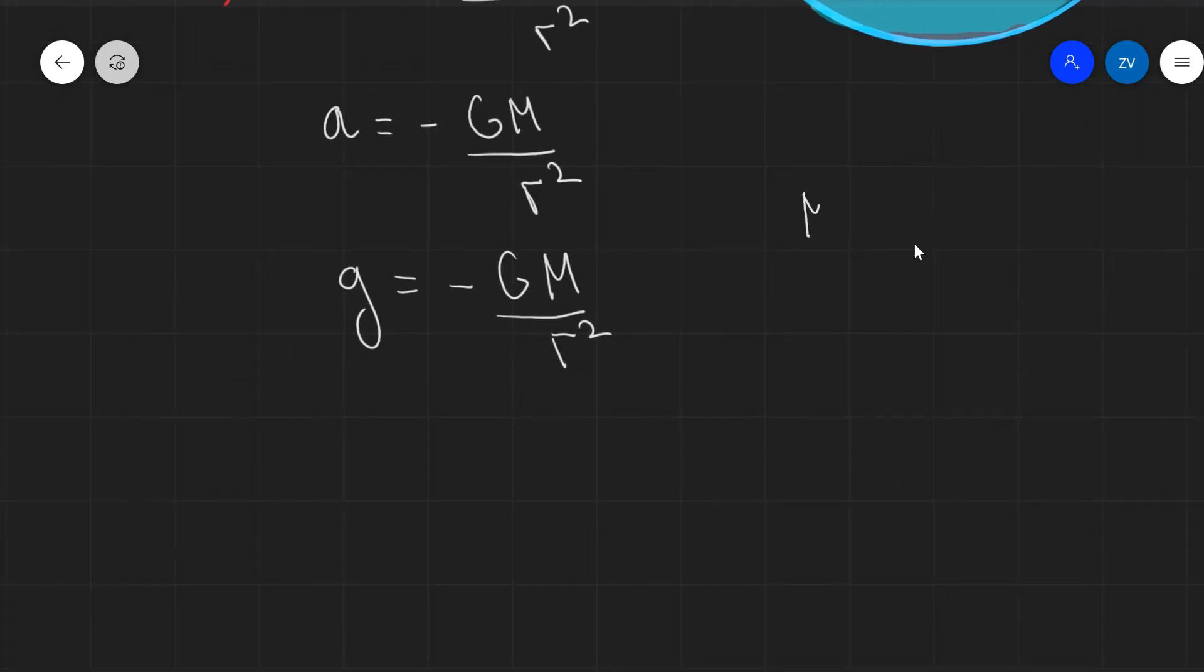So the mass of the Earth is, let's have a look, it's approximately 5.972 multiplied by 10 to the power of 24. And the radius of the Earth, let's call that R, is approximately 6.371 times 10 to the power of 6.